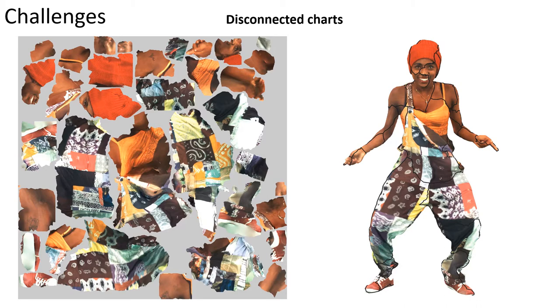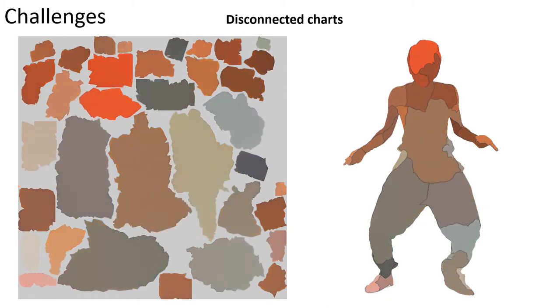There are several challenges with working in the texture domain. First, adjacent regions on the mesh may become separated in texture space. If we diffuse without accounting for connectivity, charts are smoothed independently, resulting in a piecewise smooth texture.